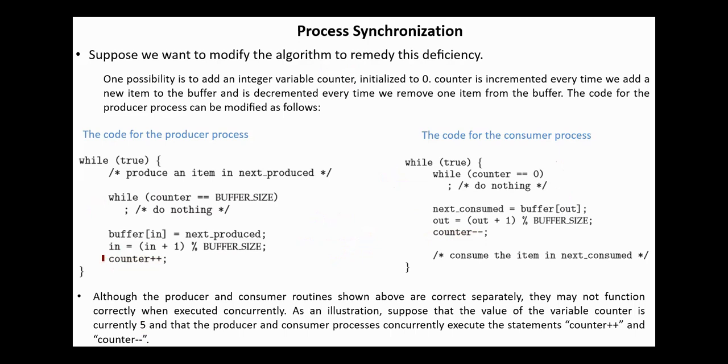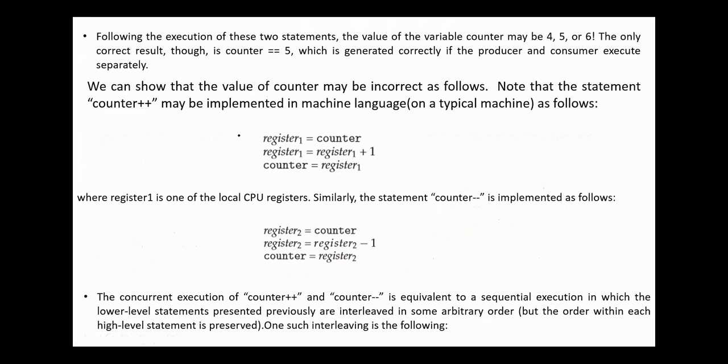After executing these instructions, the value in the counter may be 4, 5, or 6. The correct value is 5, and the values 4 and 6 are incorrect. To show that, suppose the counter plus is implemented in machine language as follows.